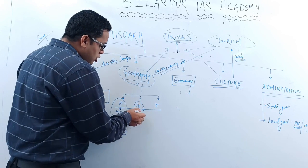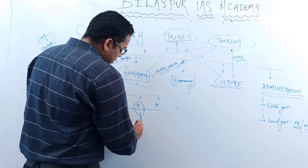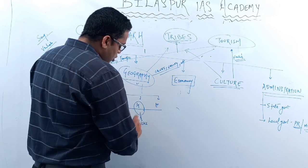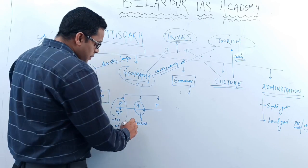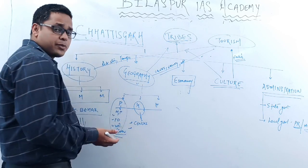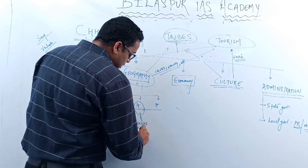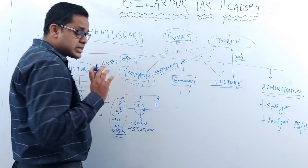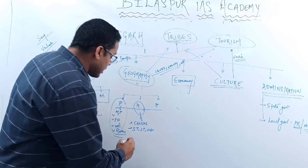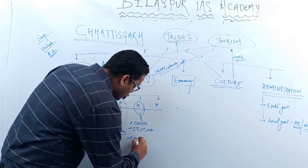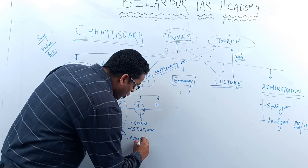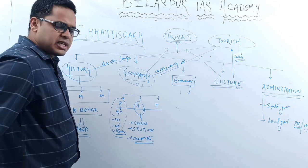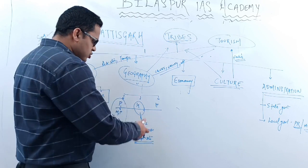With respect to human geography, the census becomes very important because questions from census definitely come in Chhattisgarh exams. Along with census, we also study SC, ST, and OBC categories, and the occupational structure of Chhattisgarh. We will discuss that in the geography section.